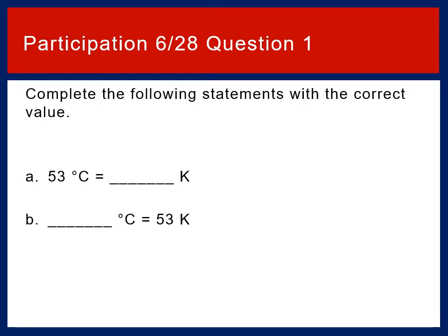Participation question 1: Complete the following statements with the correct value. A: 53 degrees Celsius is equal to blank K. And B: blank degrees Celsius is equal to 53 K. This is question 1 for participation 628, due Monday June 28th at 11:55 p.m. on Blackboard.